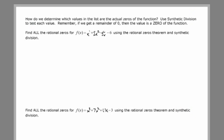So if you're given a list, how do we determine which values in the list are actual zeros of the function? We'll use synthetic division to test each value, and what we're looking for is a remainder of zero. If we find a remainder of zero, then that value is a zero.